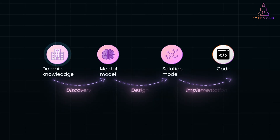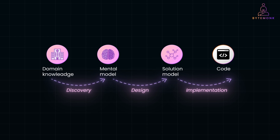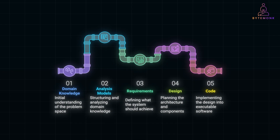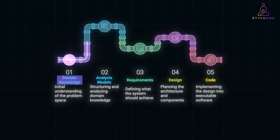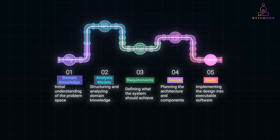In traditional development, requirements are often converted into analysis models, then design documents, and finally source code. Each step risks losing valuable context. Outdated documents and fragmented communications further complicate knowledge sharing, leaving engineers to rely on the code as the only source of truth. In the traditional software development process, domain knowledge undergoes several layers of translation — from analysis models to requirements, then to design, and finally to code. This can result in software that either solves the wrong problem or provides the wrong solution, ultimately leading to project failure.